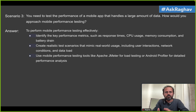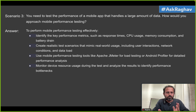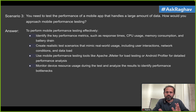You can use performance testing tools like Apache JMeter, and Android Profiler for detailed performance analysis. The tool and platform you select will depend on your requirements. You also have to monitor resource usage during the test, analyze results, and identify performance issues. You should keep a baseline — either one provided to you or one you create yourself. The first test you perform with different user loads can serve as your baseline, and all subsequent tests will be compared against it.